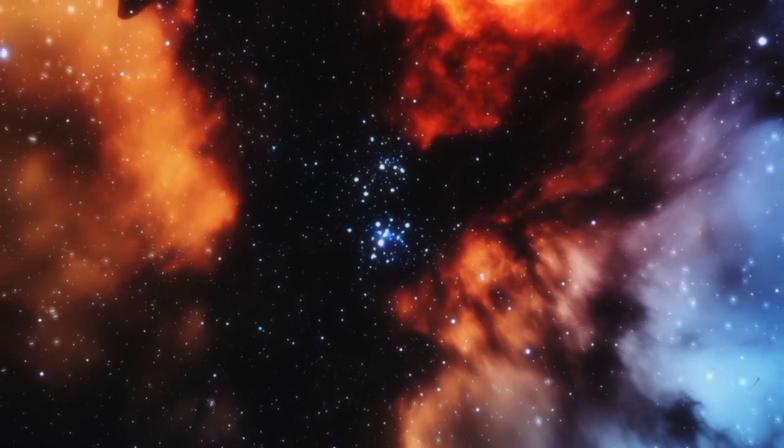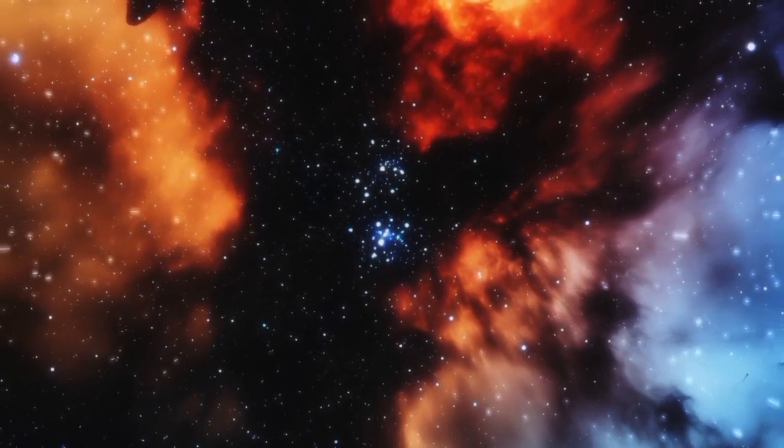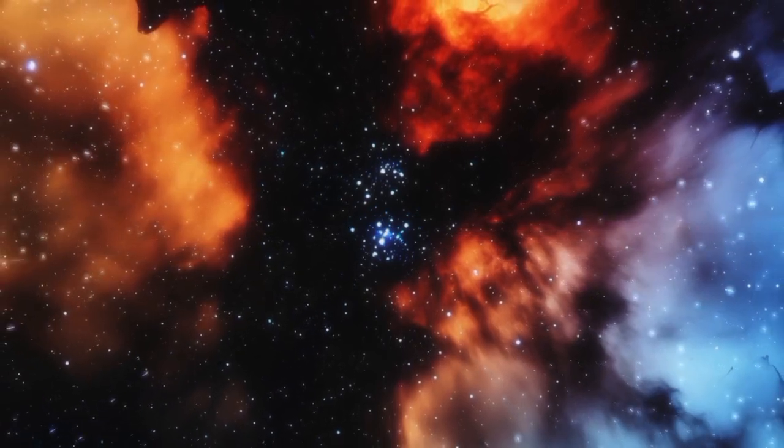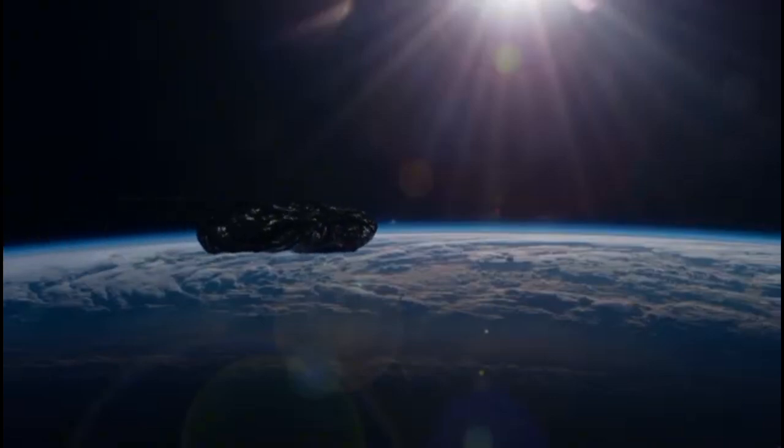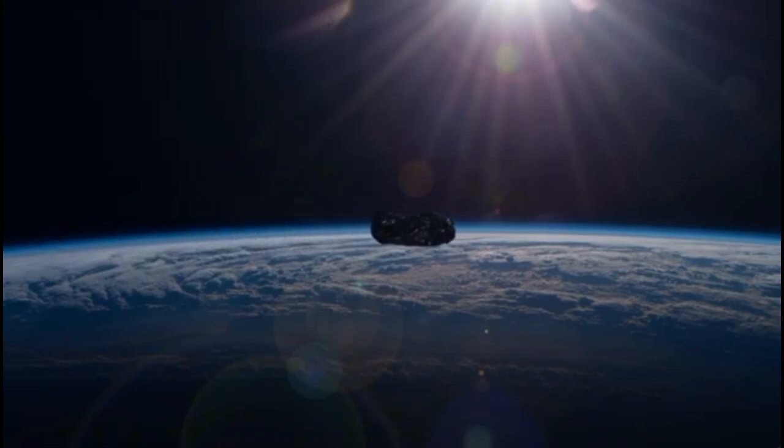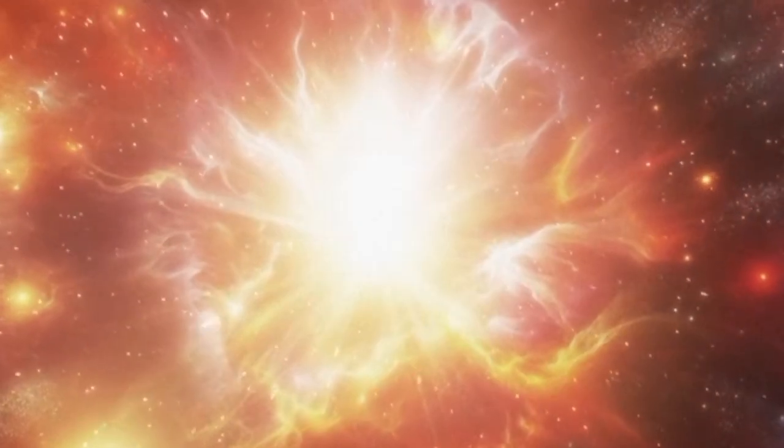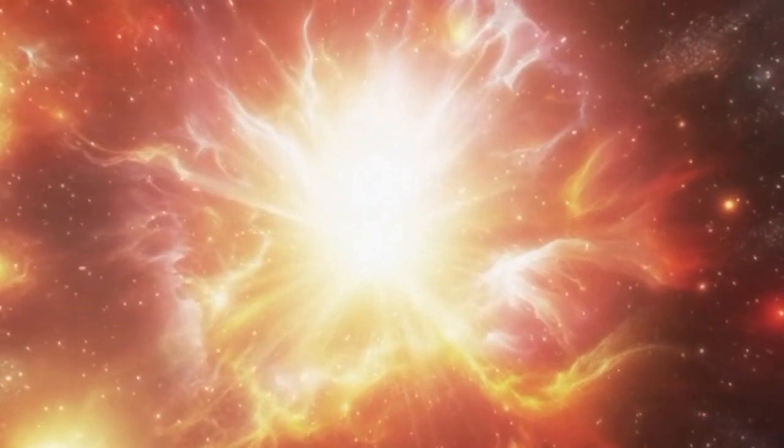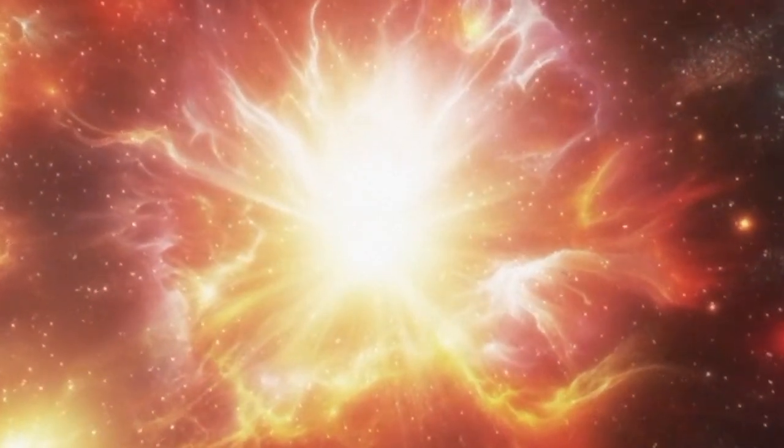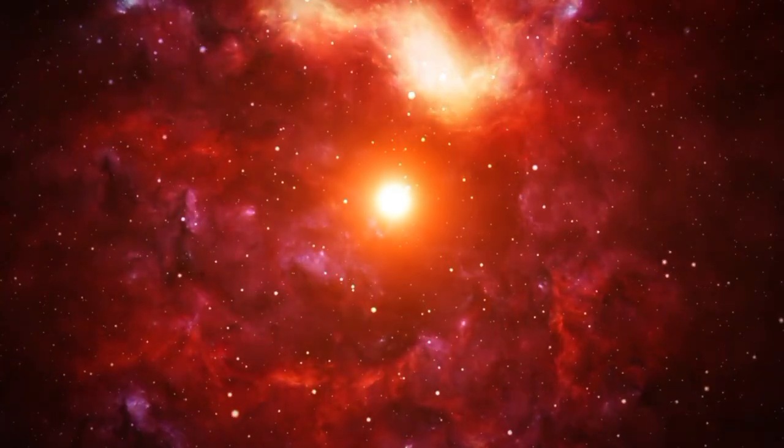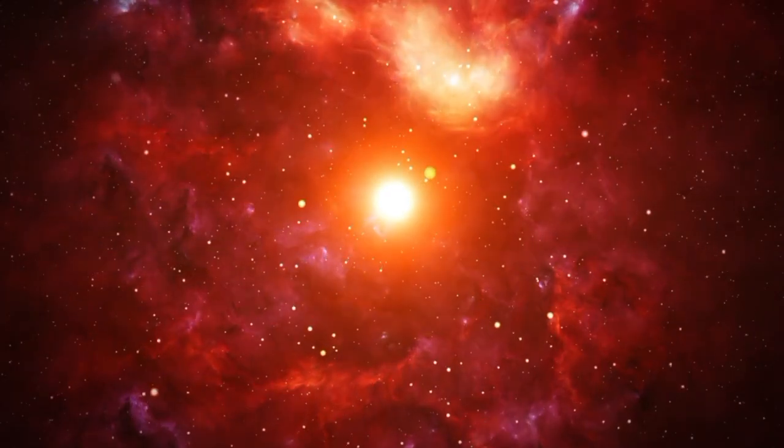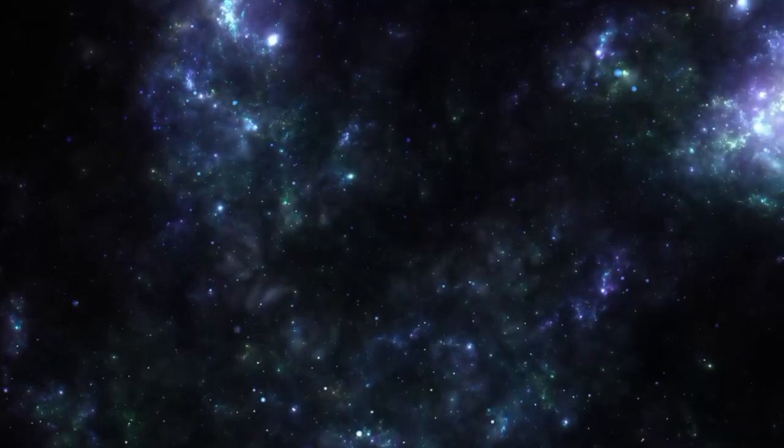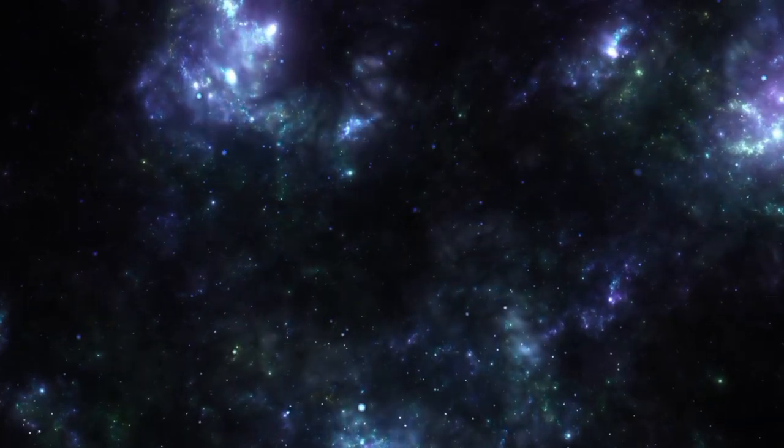So what exactly transpires when a star goes supernova? Essentially, a supernova marks the dramatic death throes of a massive star. When a star like Betelgeuse exhausts its fuel, it can no longer protect itself from gravitational forces, leading to a core collapse. This explosion is so powerful that it can briefly outshine entire galaxies. When Betelgeuse eventually goes supernova, it could shine as brightly as a full moon and might even be visible during the day. An incredible sight, to be sure.